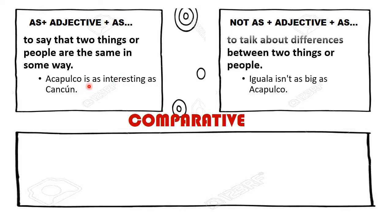Veamos la contraparte. We use not as plus adjective plus as to talk about differences between two things or people. Y utilizamos esta otra para hablar de las diferencias entre dos cosas o personas. Como ejemplo: Iguala isn't as big as Acapulco. Iguala no es tan grande como Acapulco.